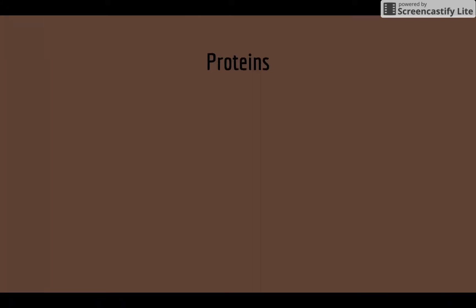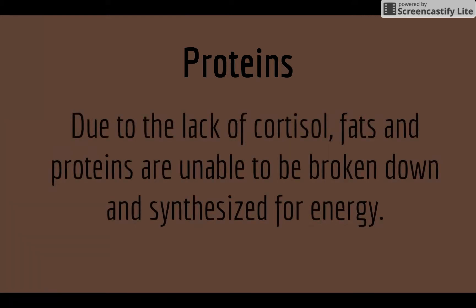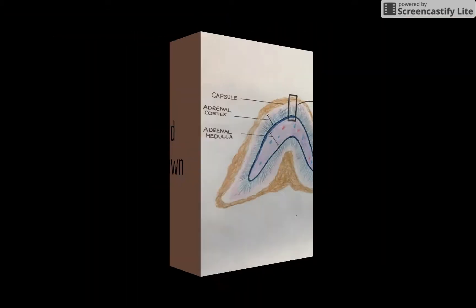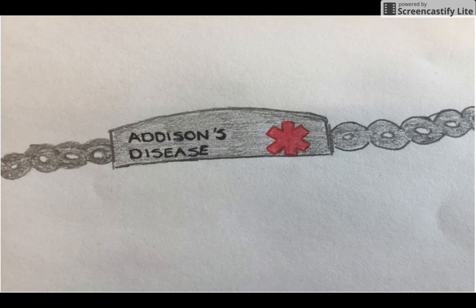Regarding proteins: due to the lack of cortisol, fats and proteins are unable to be broken down and synthesized for energy. Addison's disease requires lifetime hormone therapy replacement, and higher dosing may be needed during periods of stress. People with Addison's are likely to have episodes of low sodium and low blood sugar, and may have a limited ability to fight infection, trauma, and other stressors. All people with Addison's disease are encouraged to wear a medical alert bracelet.